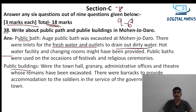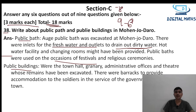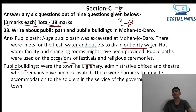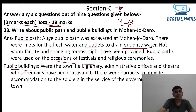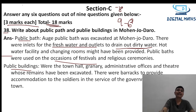Public baths were used on the occasion of festivals and religious ceremonies. Public buildings in modern terms refer to parks, halls, community centers. At that time, public buildings included town hall, granary, administrative office, and theater. That was the answer for question 38.